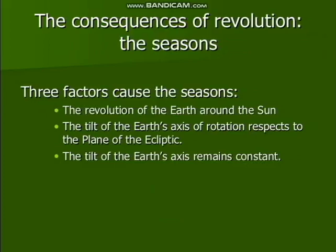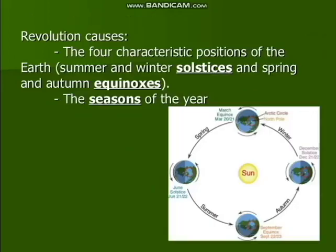What are the factors that cause the seasons? There are three factors: the revolution of the earth around the sun, the tilt of the earth's axis of rotation with respect to the plane of the ecliptic, and the fact that the tilt of the earth's axis remains constant. Summer and winter are called solstices, and spring and autumn are called equinoxes.